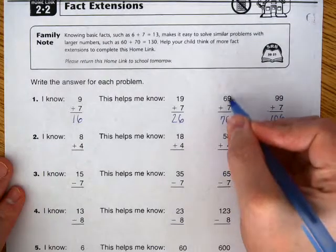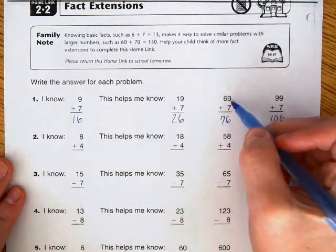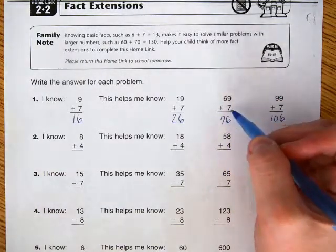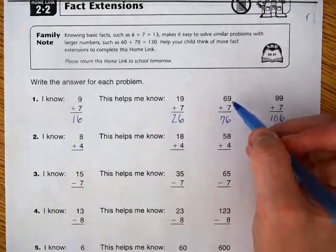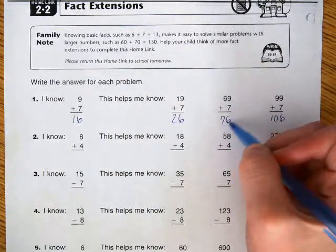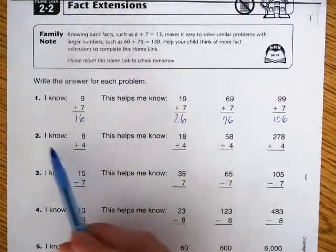So you know that the 7 and 9 is 16, so together that equals this answer here. And then next,